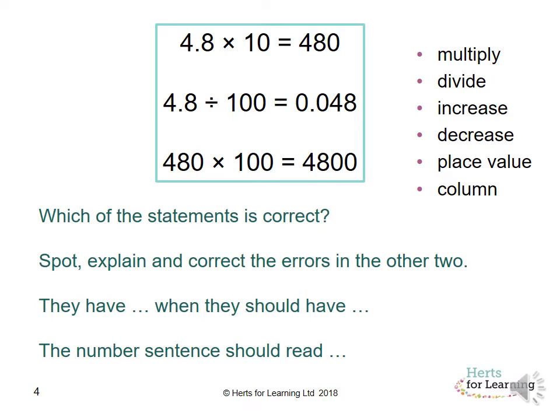Which is correct is 4.8 divided by 100. You have decreased the number by moving it two digits to the right. The reason why you know it's moving two is because it's divided by 100. We've got two zeros there. It's always a good way of looking at it. So this is the correct statement.